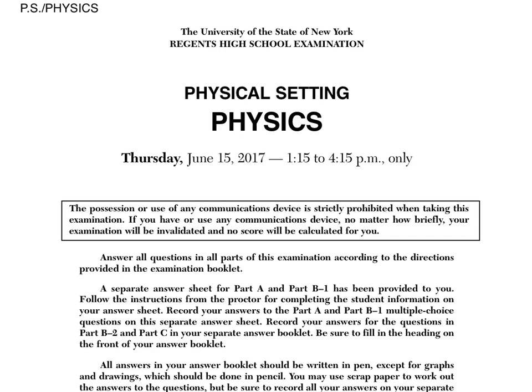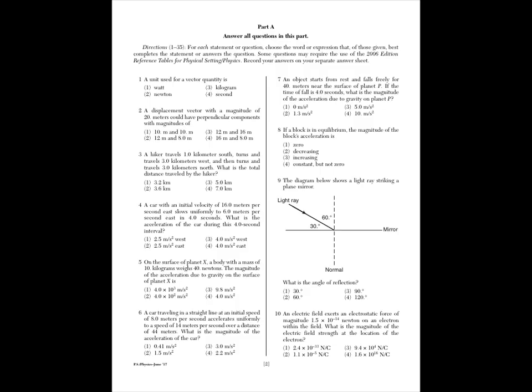Part A, which we're going to start with, is 35 multiple choice questions. The remaining parts have 15 multiple choice questions, and the remaining 35 points are in the free response section, in Part B2 and Part C. We're going to begin with Part A right here on this page.